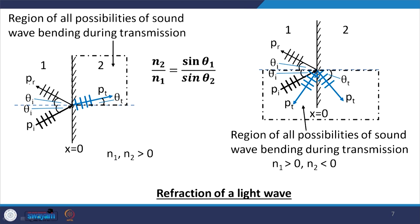If both medium 1 and medium 2 have positive refractive index, then theta 2 is limited and can only vary within a standard domain. But if one of the refractive indices becomes negative — say for the second medium — then when an electromagnetic wave hits the boundary of that medium which has a negative refractive index, theta 2 will have a negative value. This positive direction for theta i and positive direction for theta t follow the standard convention.